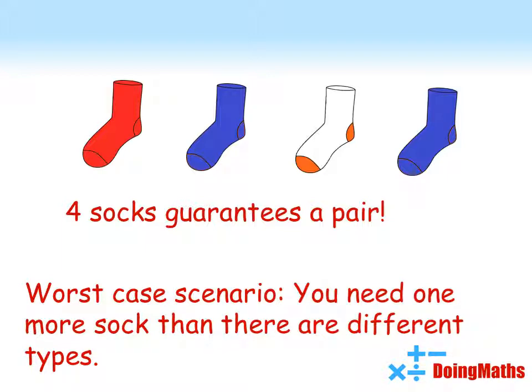So if you have a drawer containing ten different colours of socks, by the time you've pulled out eleven you are guaranteed to have at least one pair in your eleven socks.